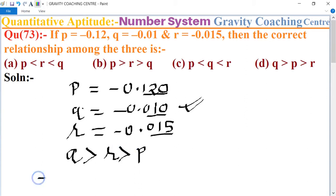We can also write this as P < R < Q. So option A is the correct answer.